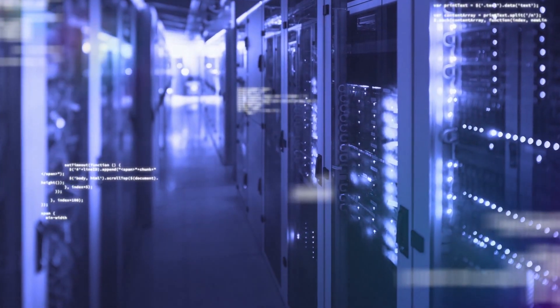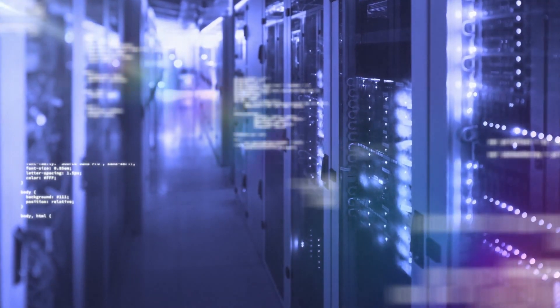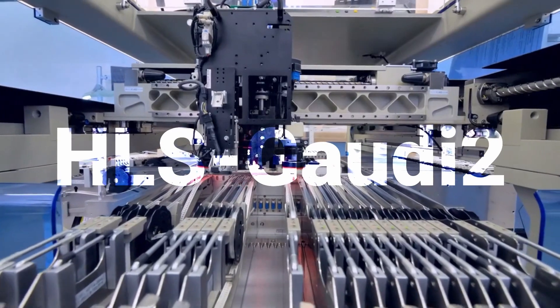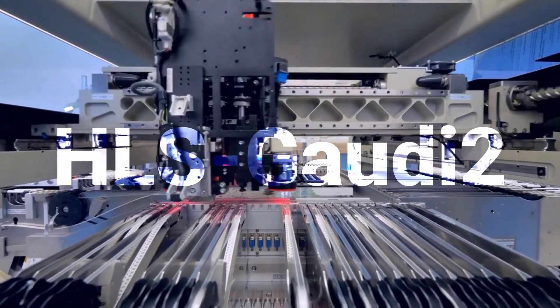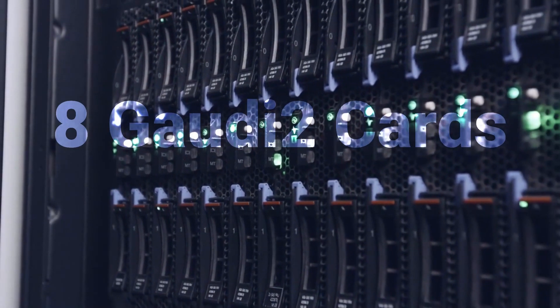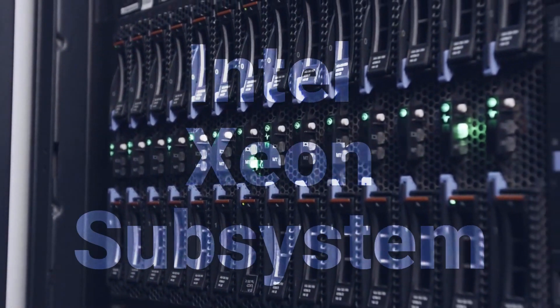Gaudi 2, which is now available to Habana customers, is available in the mezzanine card form factor and as a part of the HLS Gaudi 2 server, which is intended to support customer evaluations of Gaudi 2. The server is equipped with 8 Gaudi 2 cards and a dual-socket Intel Xeon subsystem.